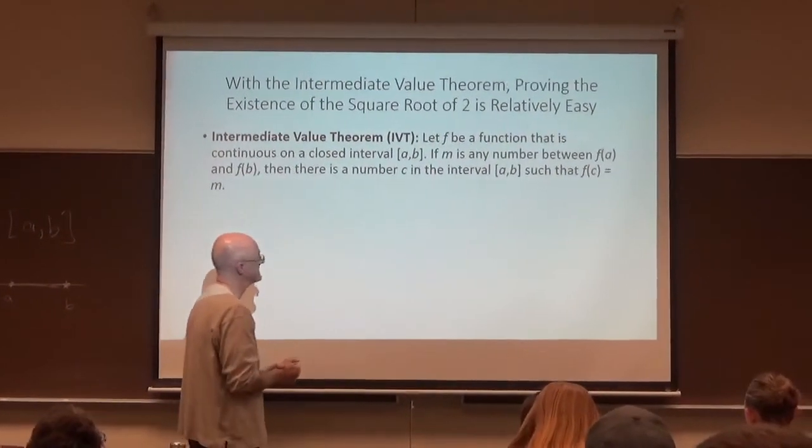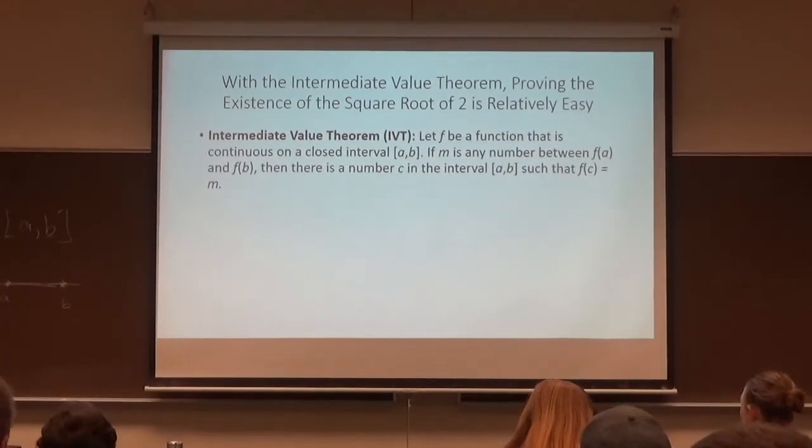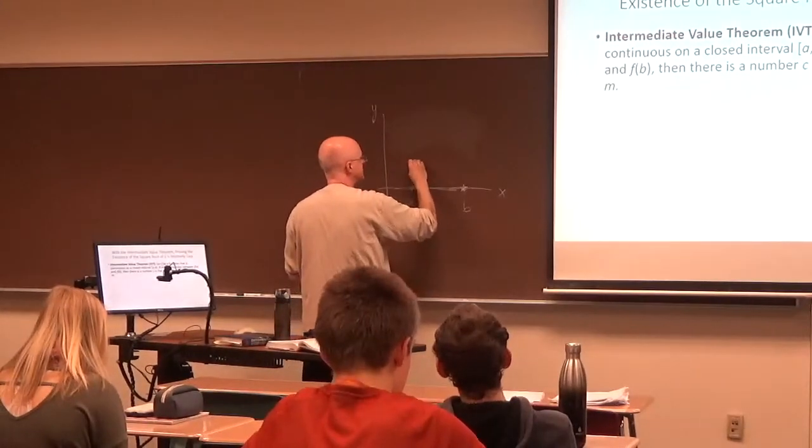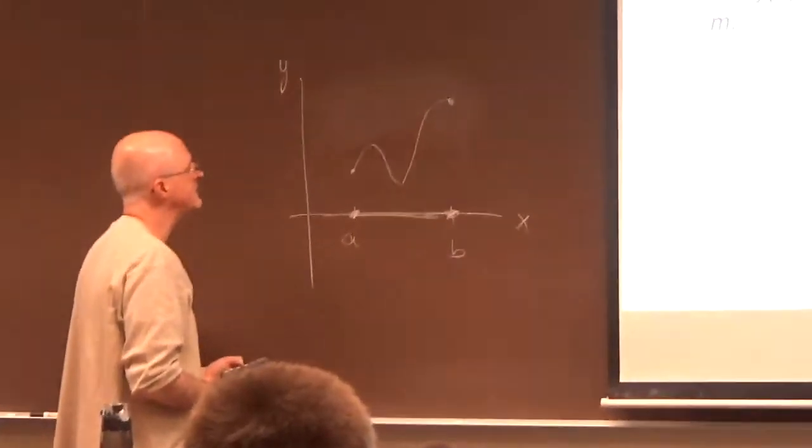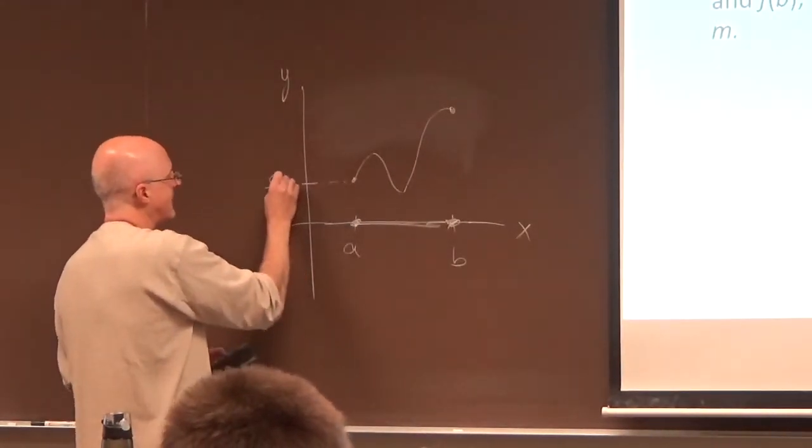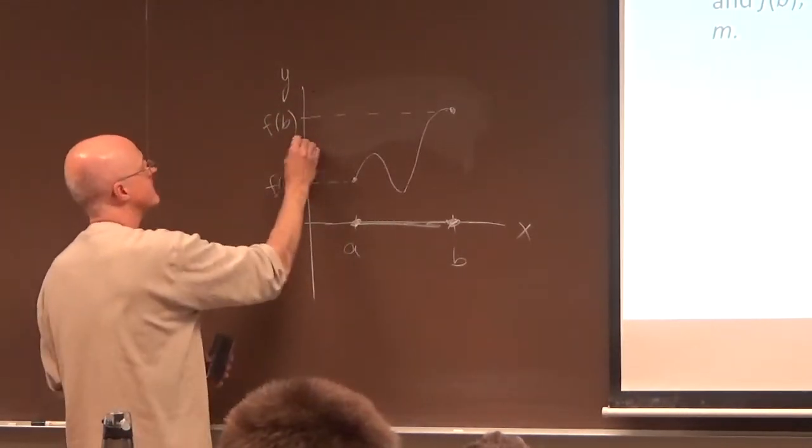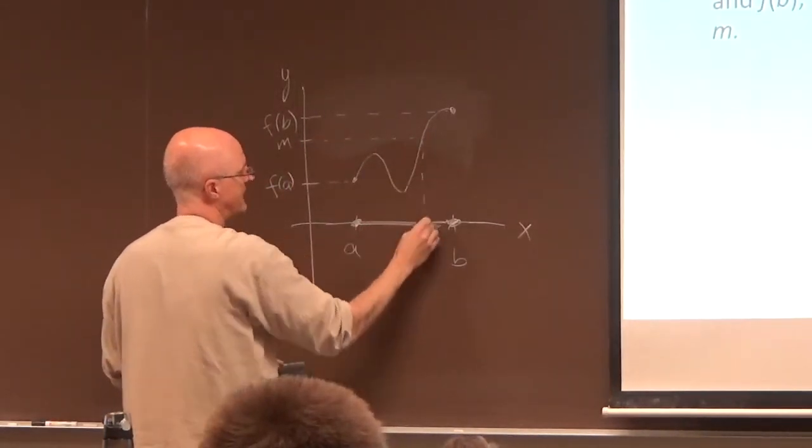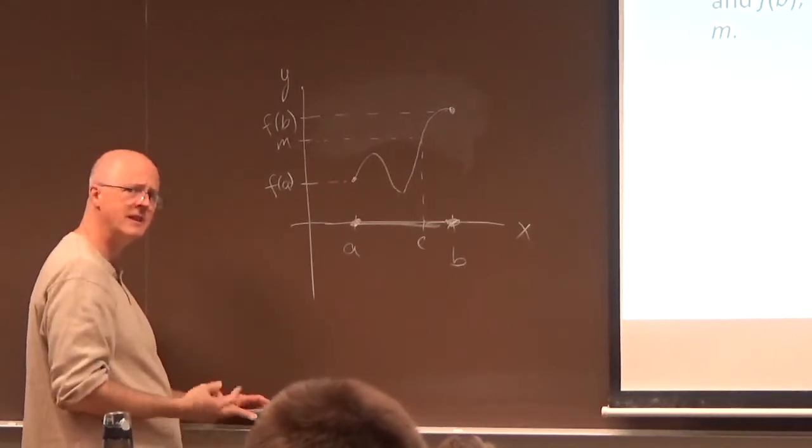So if you try to imagine a general kind of graph here, so this is the x-axis here, y-axis here, and you've got this function that's continuous over this interval so you can draw its graph without picking up your writing utensil. So this number right here is f of A. This number right here is f of B. M is any number between them. Say right there. There is at least one number C. In this case, it would be right here where f of C equals M. So it's a pretty reasonable sounding theorem when you draw the picture and think about it carefully.